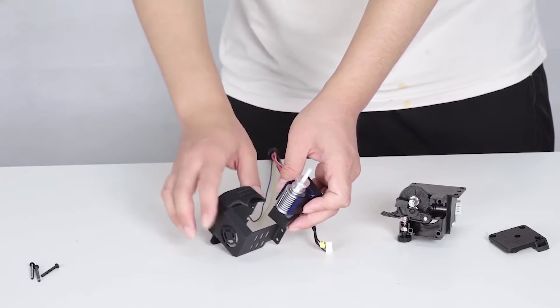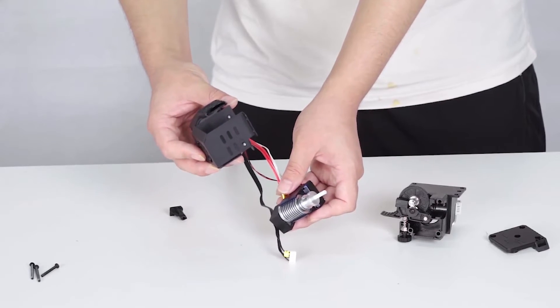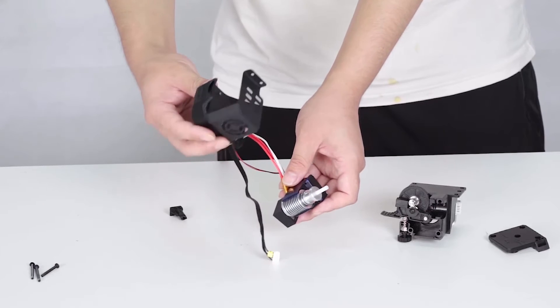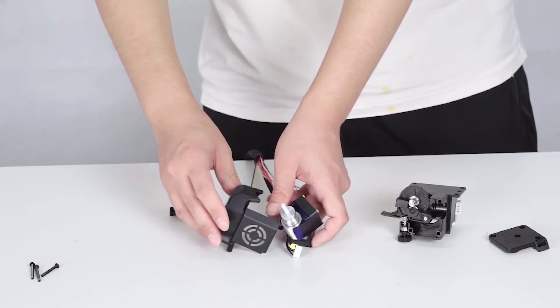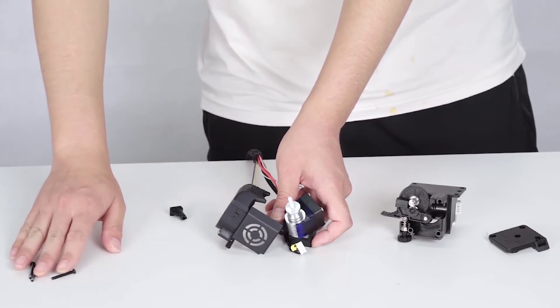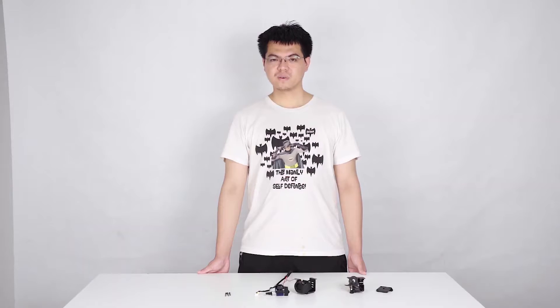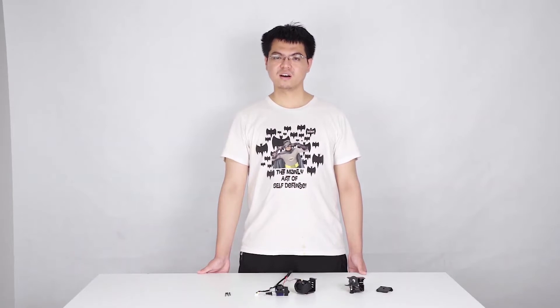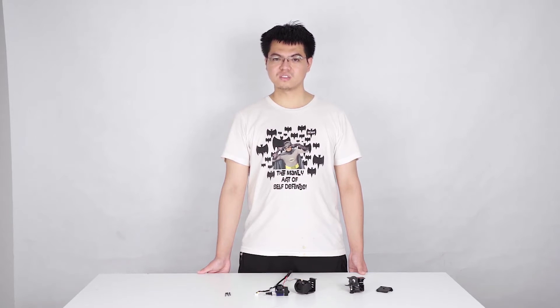And then let us have a look of the fan shield. I'm going to turn to this side. And finally, don't forget these three tiny screws. Now let our partner install the extruder kit for all of you.